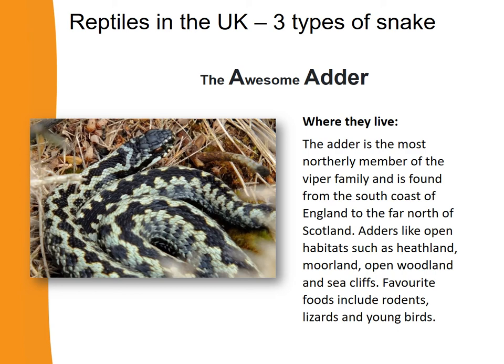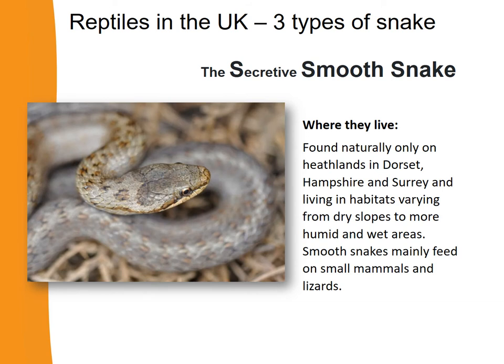What are some of the things those habitats provide? Well, in terms of food, their favourite foods are rodents, lizards and young birds. Now, the smooth snake — where do they live? Smooth snakes are found naturally only on heathlands in Dorset, Hampshire and Surrey.